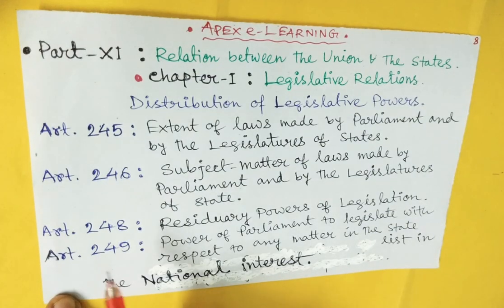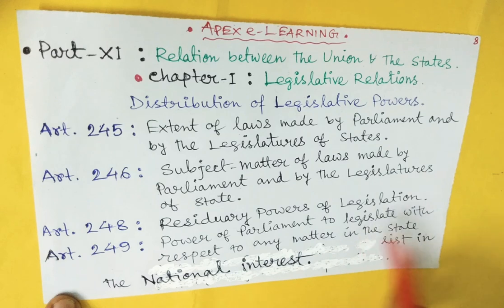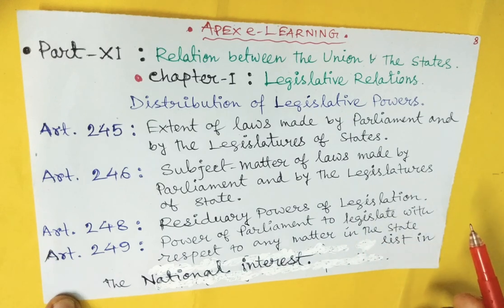Article 248 is most important. Article 248 says: residuary powers of legislation vest with the union.